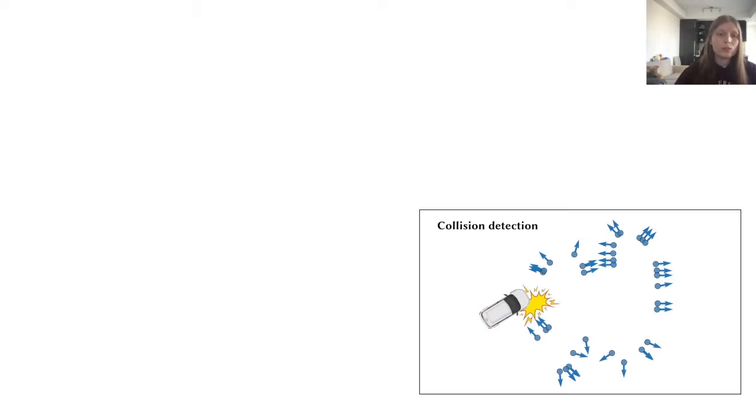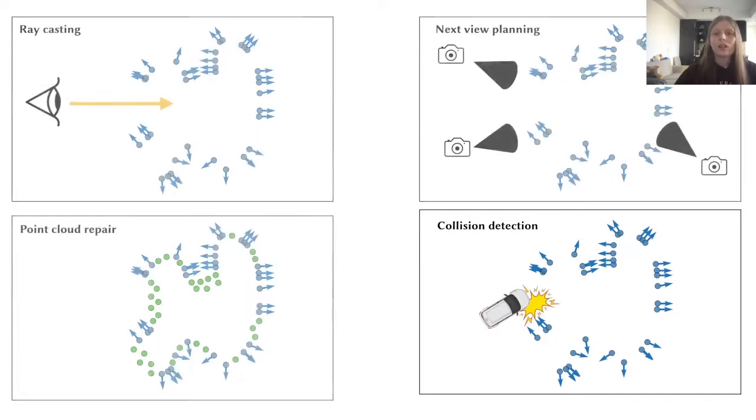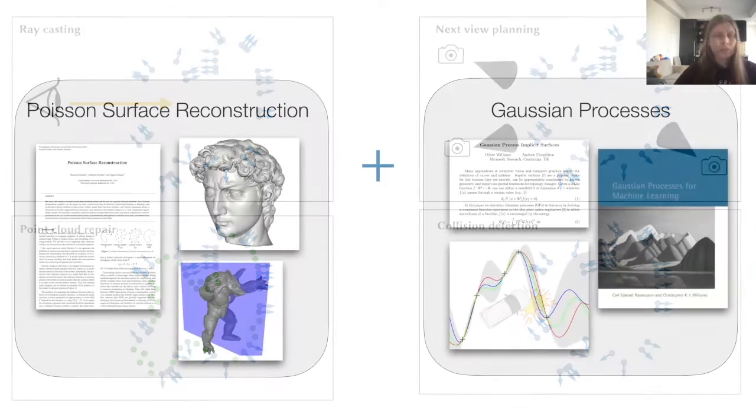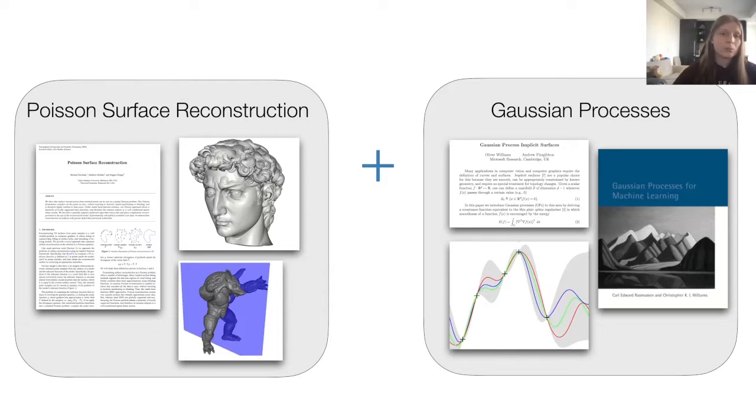This will not just be useful for collision detection, but it will also aid us in other queries, like raycasting, point cloud repair, or next view planning. We will achieve this by combining the Poisson reconstruction algorithm with insights from statistical learning theory, specifically with the concept of a Gaussian process.